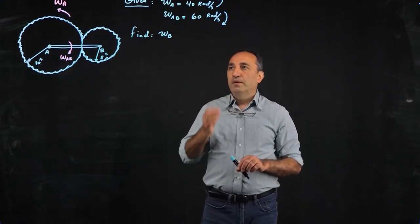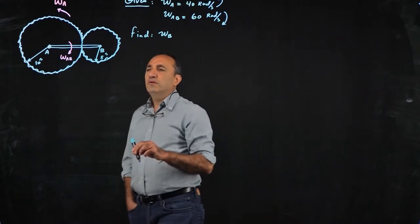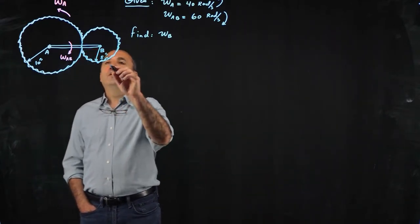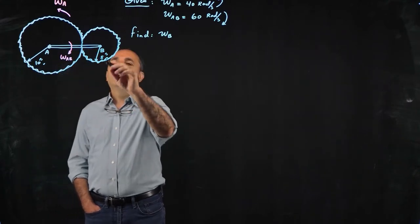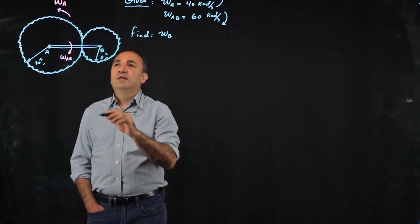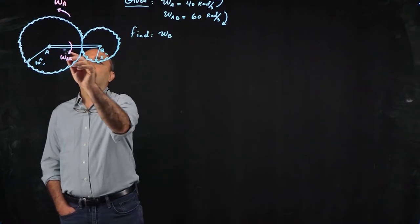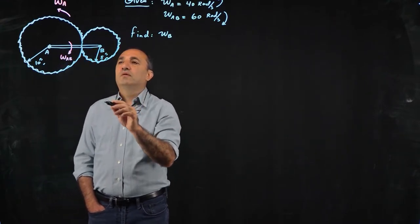Okay, so here we are given a problem where we have two gears. Gear A as you could see has a radius of 10 inch and gear B has a radius of 5 inch, and then you have this arm AB which is connecting gear A to gear B.